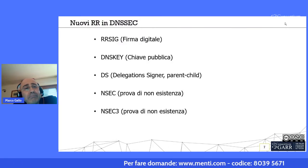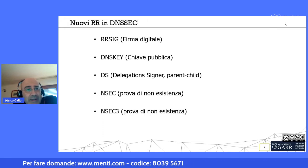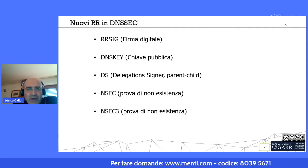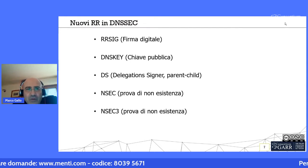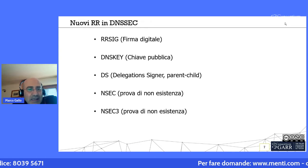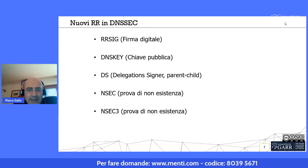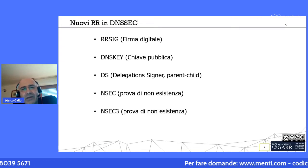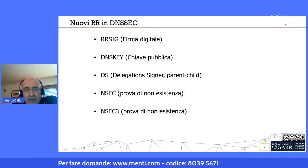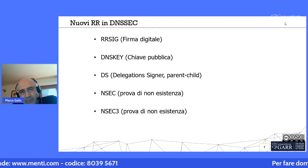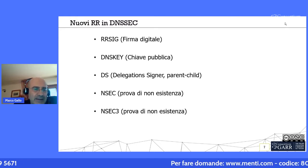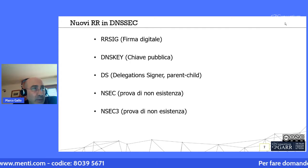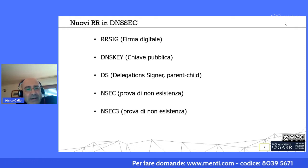Il DNSSEC introduce nuovi resource record: l'RRSIG, che appone una firma digitale ad ogni resource record scritto nel file di zona; il DNSKEY, che pubblica la chiave pubblica nel file di zona per la validazione delle firme; il DS (Delegation Signer), che viene scritto direttamente sulla zona padre del nome a dominio; e infine NSEC e NSEC3, due record equivalenti usati per la prova di non esistenza.